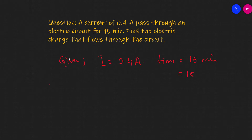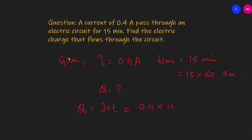We need to convert 15 minutes into seconds. If we have Q, we are looking for charge in Coulombs. Using the formula I = Q divided by T, if I is 0.4, multiplied by 15 times 60, then multiplying gives us 900 seconds. The result will be 360 Coulombs.